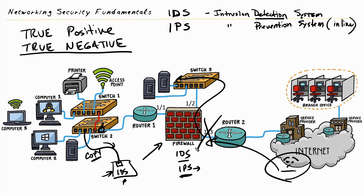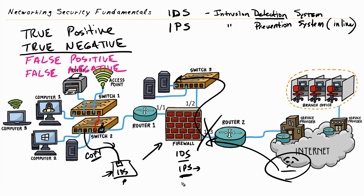If the system identifies innocent traffic as malicious, that's called a false positive. If there's an attack and the IDS or IPS doesn't recognize it as malicious, that's a false negative — and those are tougher, because if it's not sending alarms, you'd need some other indication that a compromise is occurring. With any IDS or IPS system there will be tuning and tweaking to achieve accurate identification of malicious traffic without false alarms on innocent traffic.